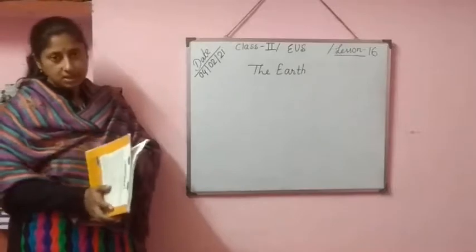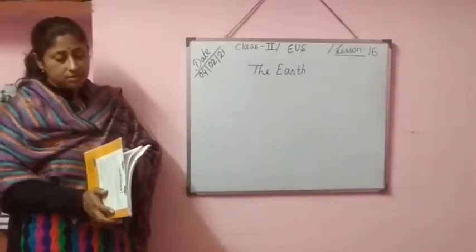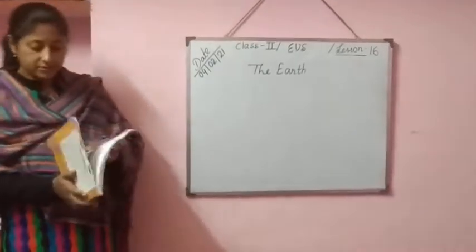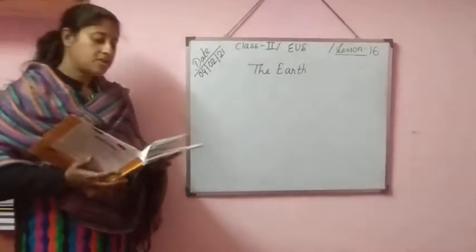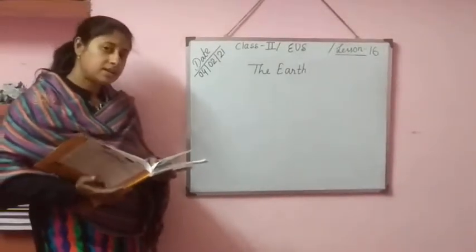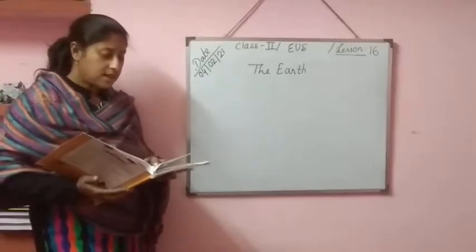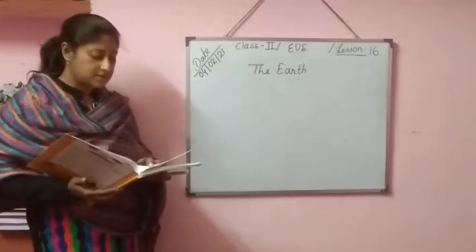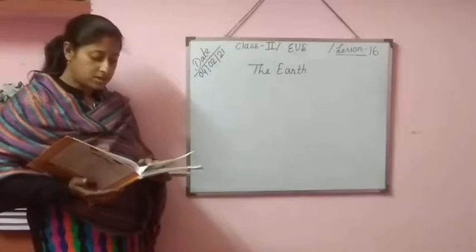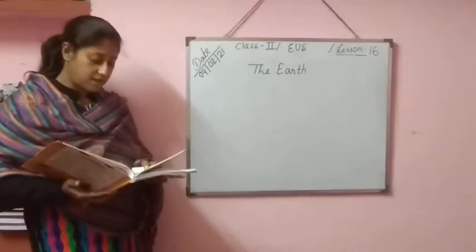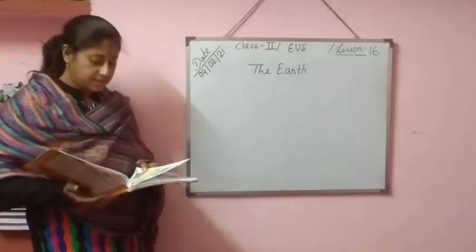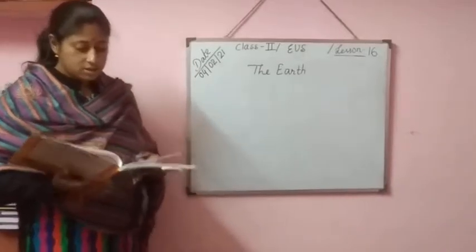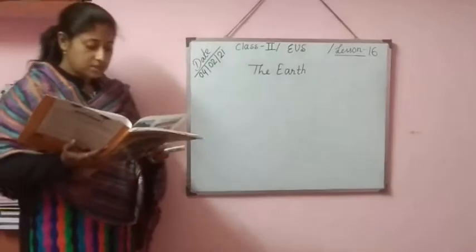Ocean, sea, lakes, rivers, and ponds. Oceans are the largest water bodies of salt water. Seas are also large salt water bodies but smaller than oceans. Lakes are large freshwater bodies which are surrounded by land on all sides. Rivers are flowing freshwater bodies that mainly originate from mountains and end into the sea. Ponds are very small freshwater bodies, also surrounded by land on all sides.